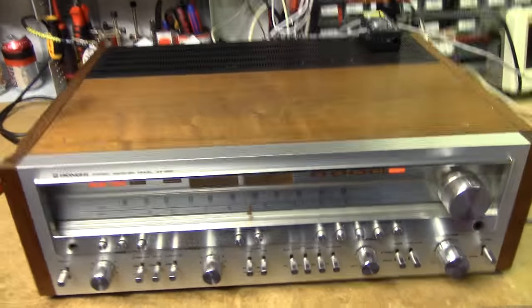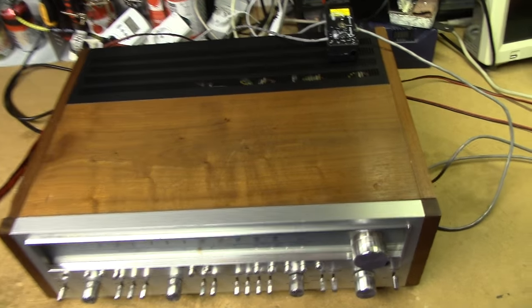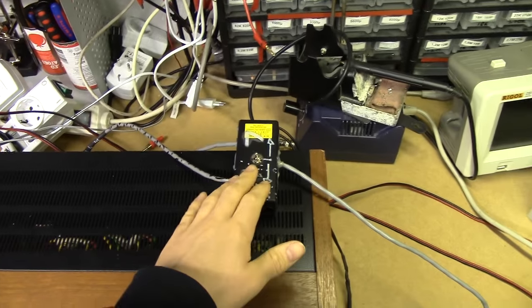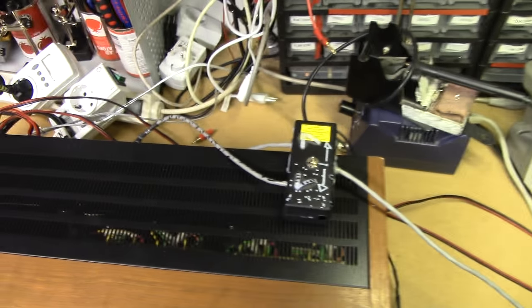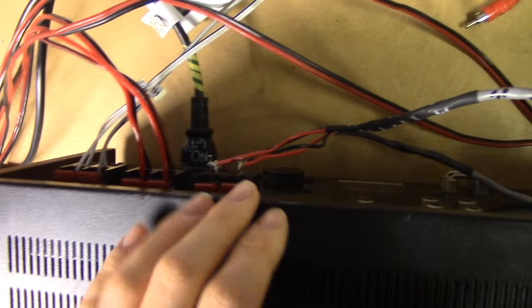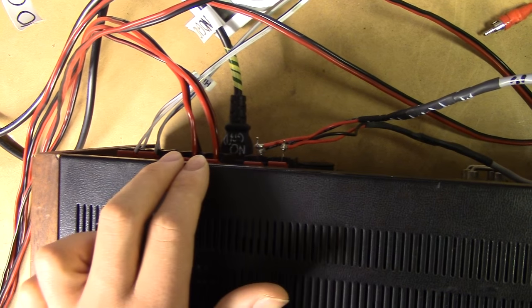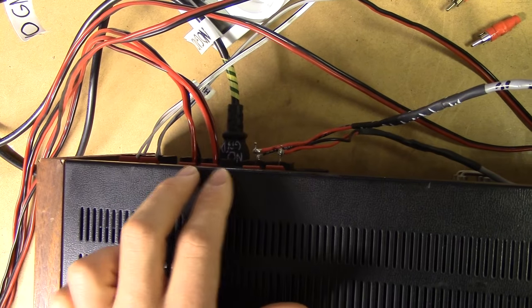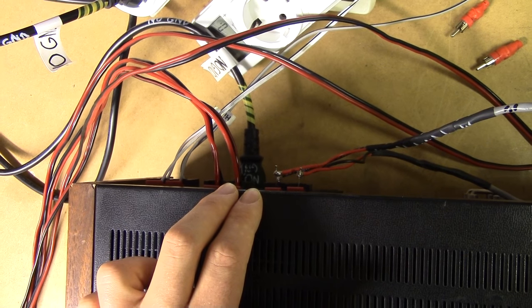So let's just go through the test setup. This is obviously the receiver itself, and here we've got a channel switch which is going to select which channel we're measuring, and it's connected to one of these speaker outputs on the back. To the other speaker outputs, they're of course just in parallel, we have a switchable 4 or 8 ohm dummy load connected.